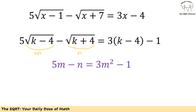We have 5 times (m minus n) equals 3 times m squared minus 1. In this equation I have two variables, m and n, but only one equation. Previously I had k as the only unknown variable with one equation, so something seems wrong here.